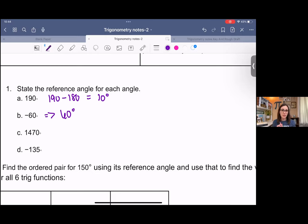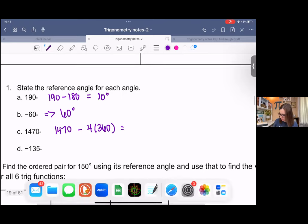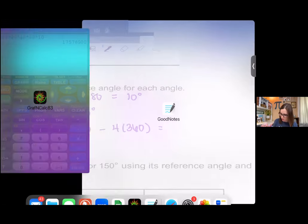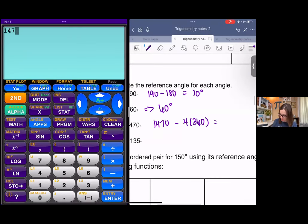1470 is pretty big. So I'm going to use multiples of 360. You can just kind of play around with that to figure out how many multiples. I'm thinking four will do because four times three is twelve, so that'll get me pretty close. 1470 minus four times 360, we'll just try it. That'll do. 30. I did get close. 30 degrees would be the reference angle there.